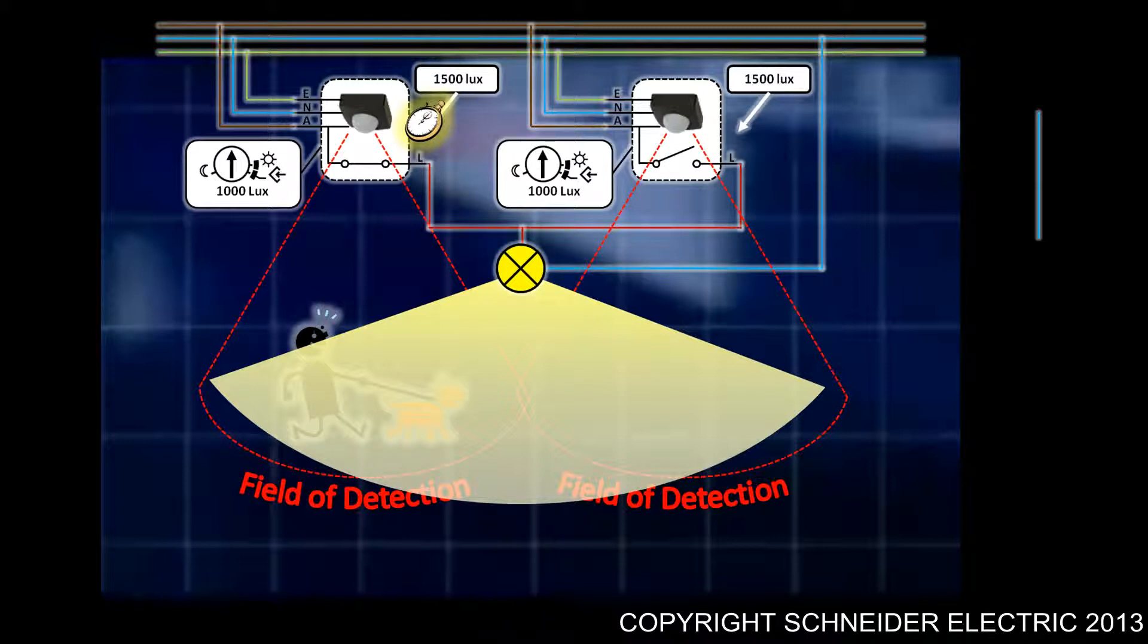Now what happens is, any movement detected by that second sensor, because it's reading, let's say for this example, with that light turned on 1500 lux, it thinks that there's sufficient light and it's going to disregard any movement. That basically means that if you walk into that second area, it's not going to be taken into consideration. That's something else just to watch out for.